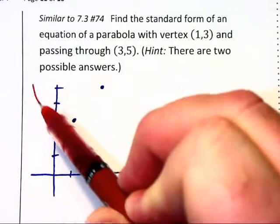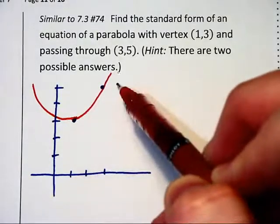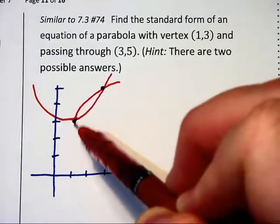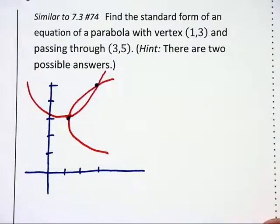Note that the curve could either pass upward, like this, or it can open to the right, like this. So there are two possible cases.